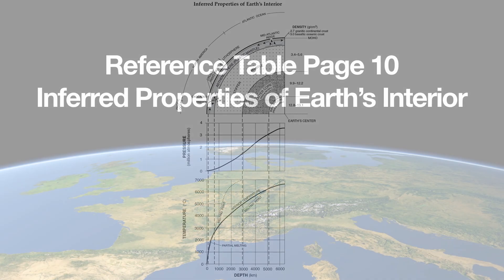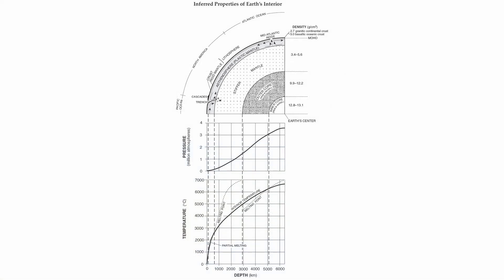The reason why it's called the inferred properties chart is very simply because we haven't dug a hole any deeper than 7.5 miles into the Earth. So the majority of our information comes through the study of earthquake waves and meteorite studies.